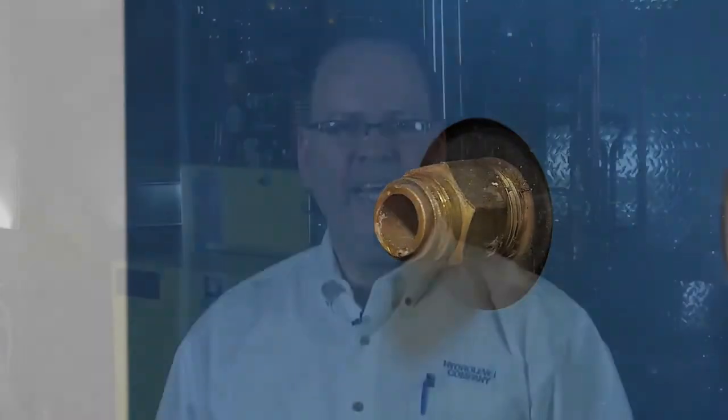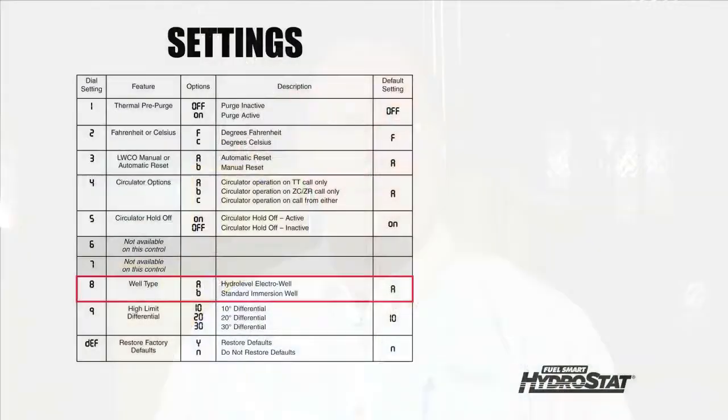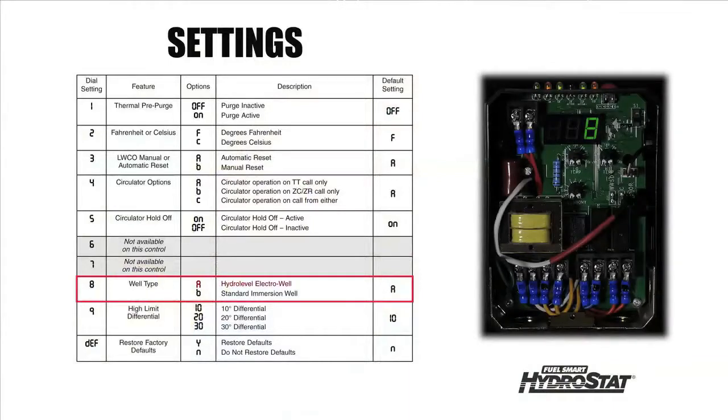If metal to metal contact is ever lost between the sensor and the inside of the well, this option will prevent the possibility of a false low water condition. The default setting A is used for electro wells and B is for standard immersion wells.